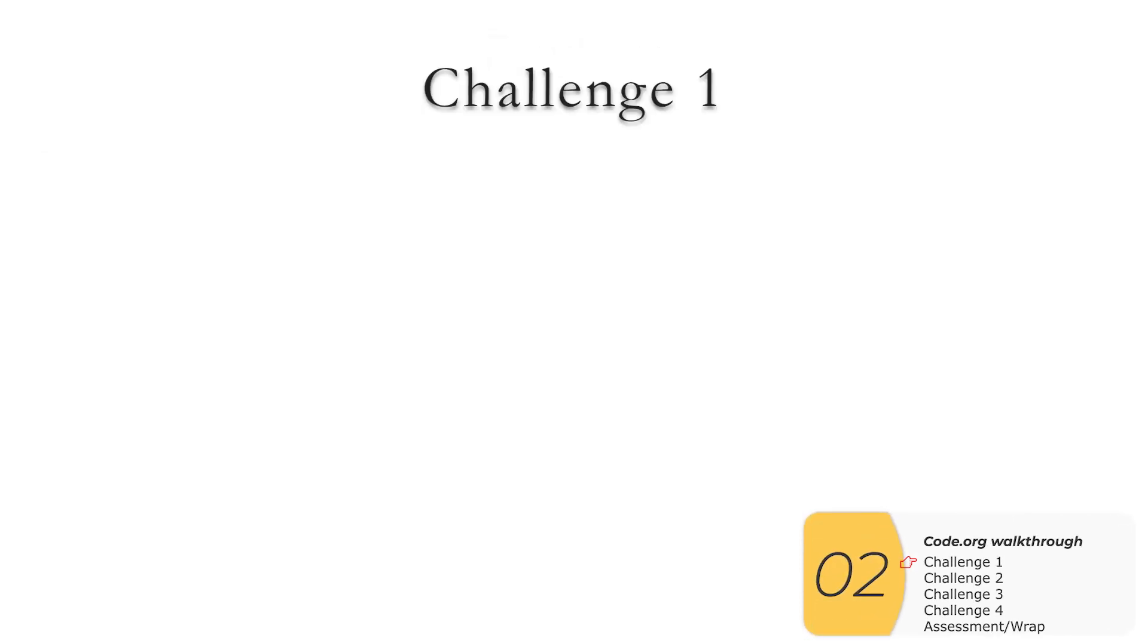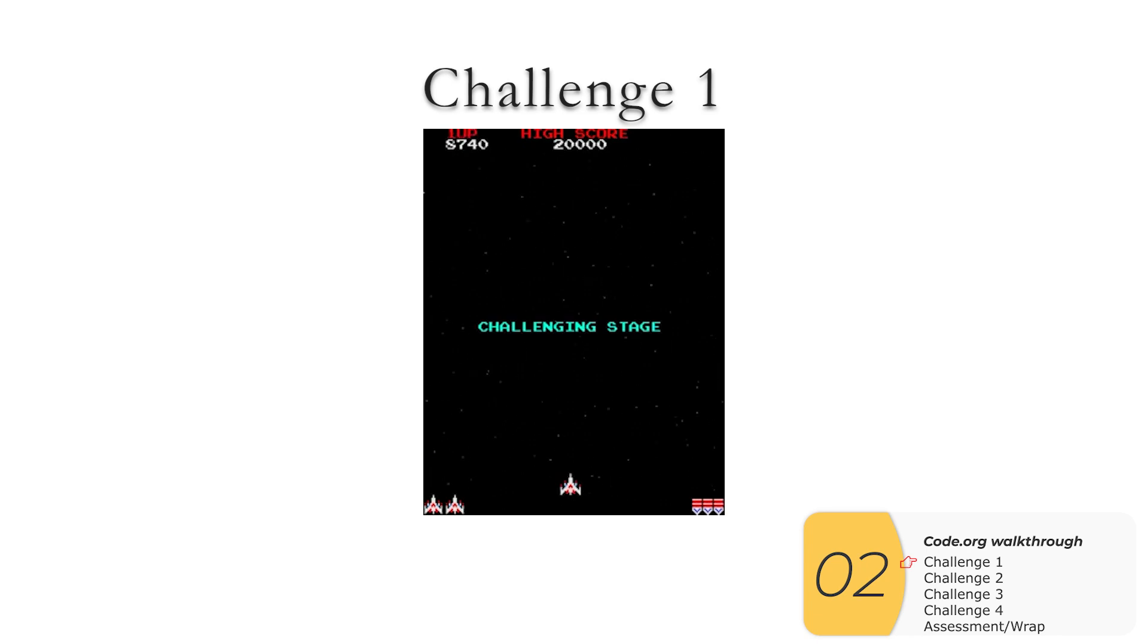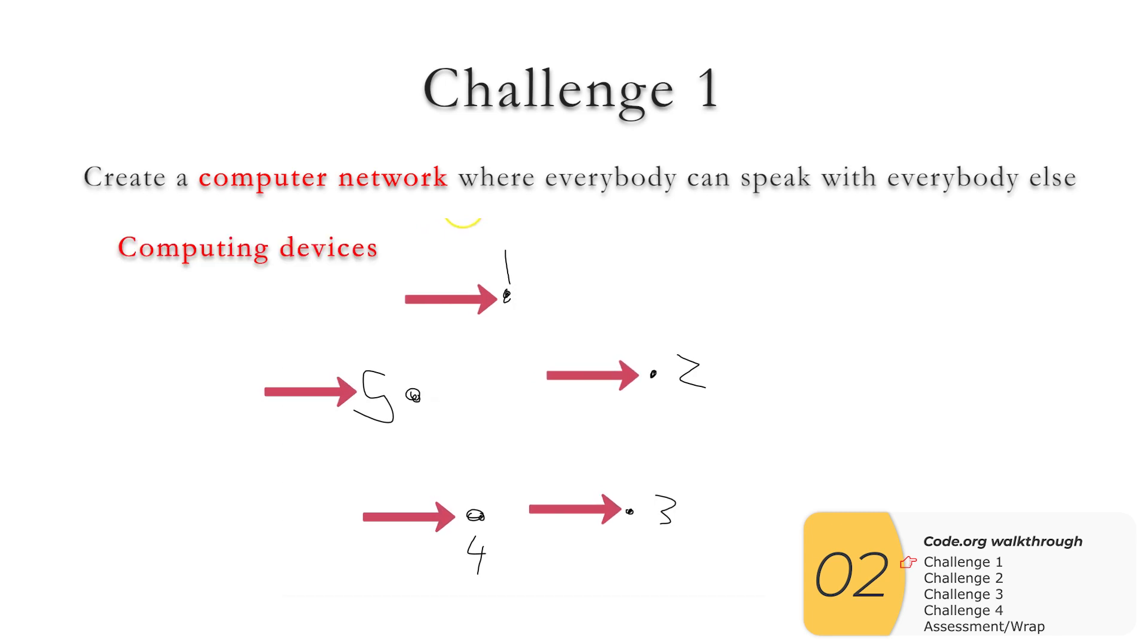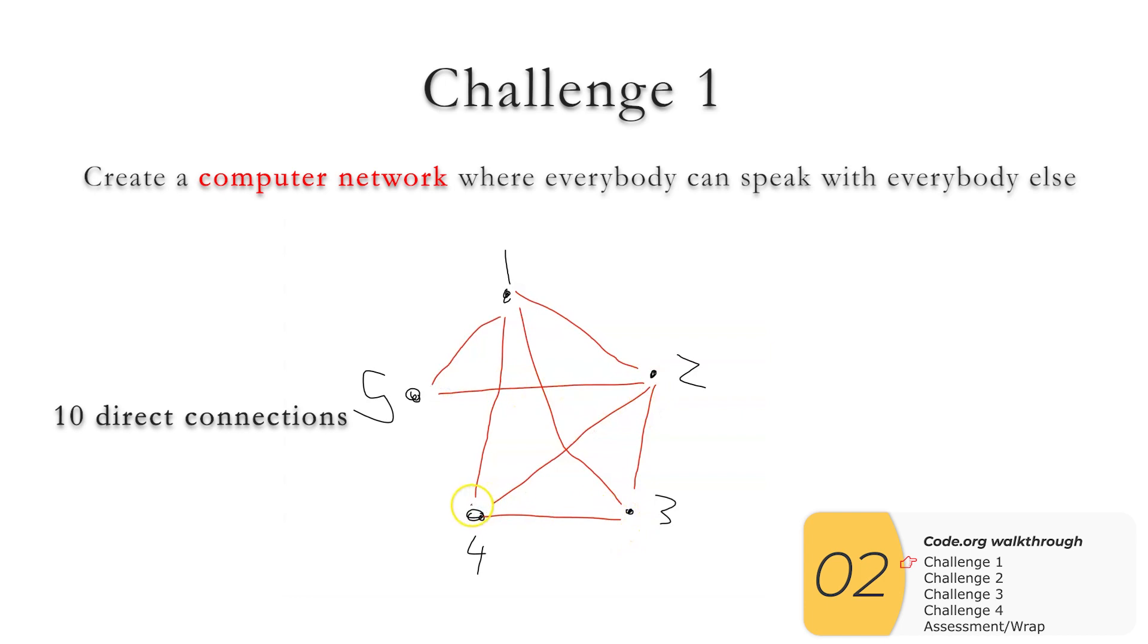Now we're looking at Code.org's first challenge. That challenge is to create a computer network where everyone can speak with everyone else. And on this diagram, all of these are computing devices. Computing devices are just computers. We're going to connect the computing devices so that we can go from point 1 to point 2 through different paths. And this entire thing together is a computer network. These are definitions that you'll need to know for the APCSP exam.